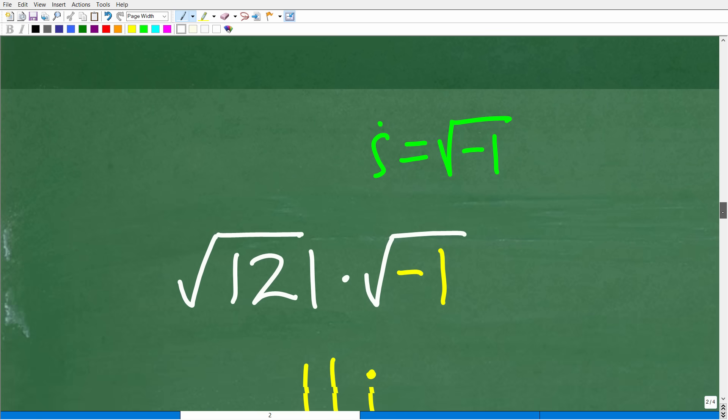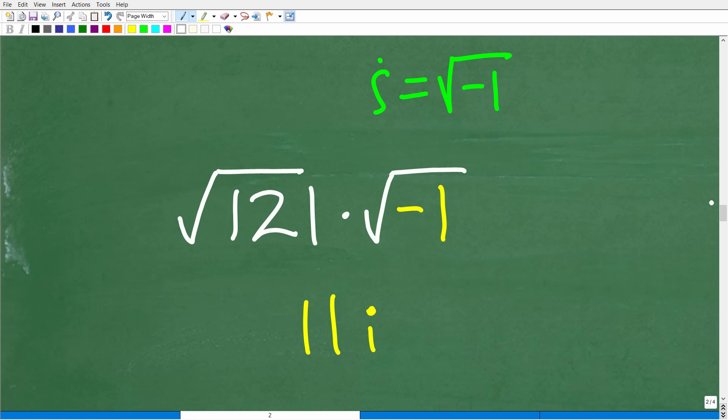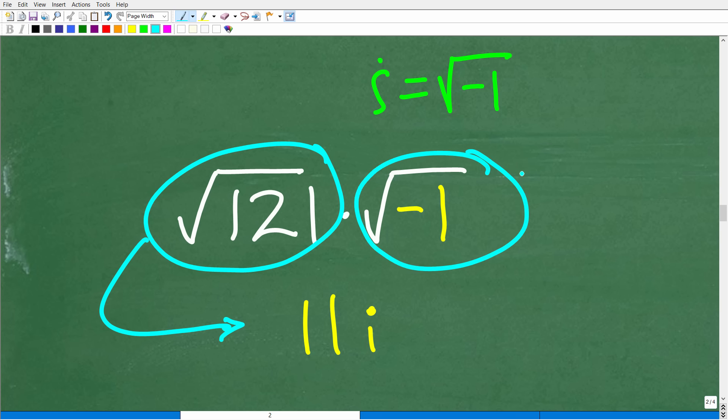All right, so hopefully you can see that this is now going to be very easy to solve. So the square root of positive 121, of course, we're just thinking about the principal square root. This is going to be 11, and then the square root of negative one by definition is i. So we're just going to put an i right there, and there you go, 11i. Now, if you did put positive negative 11i, that's perfectly fine. I would accept that as well, but I just wanted to kind of, you know, make that distinction about the principal square root.